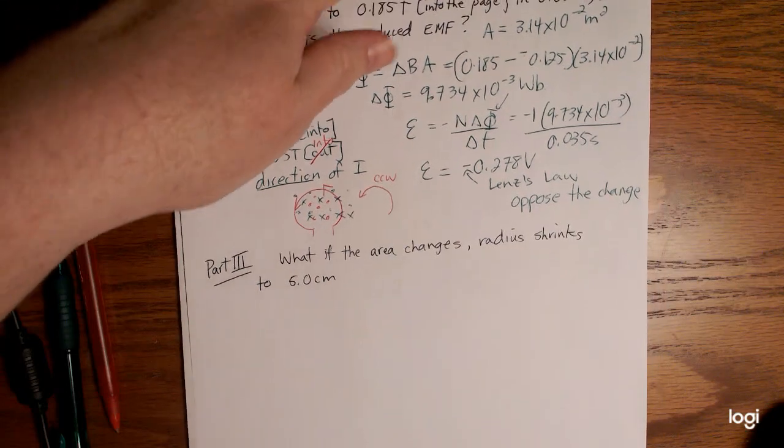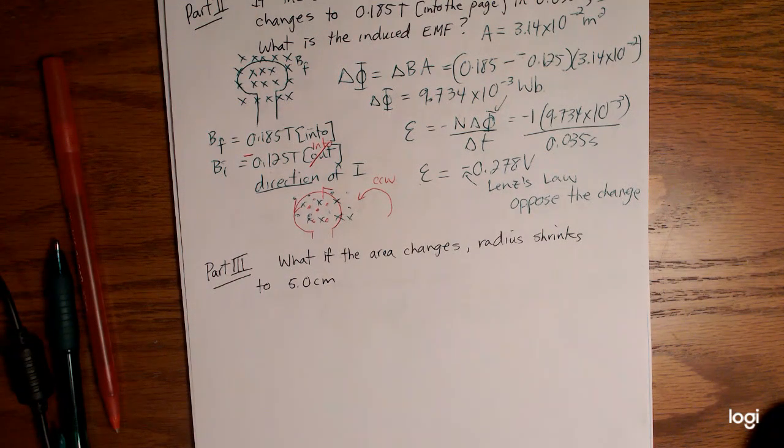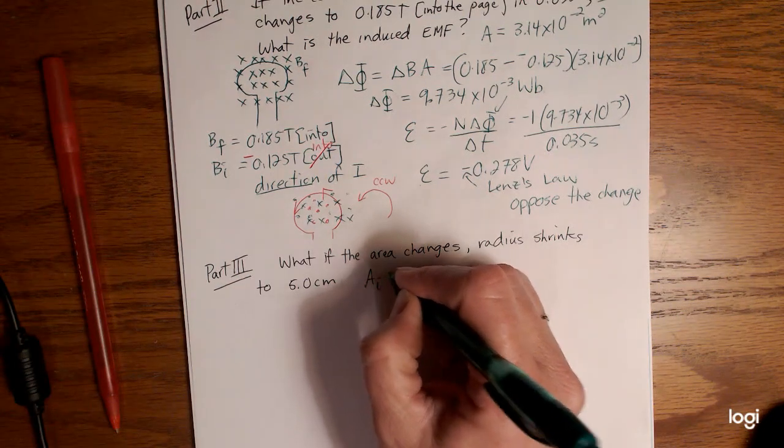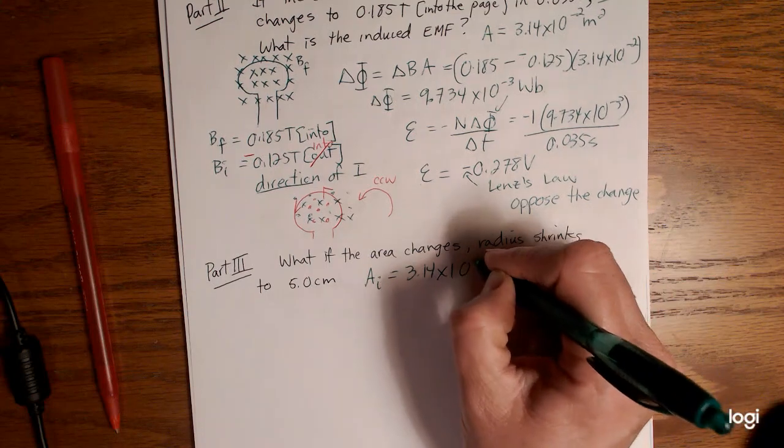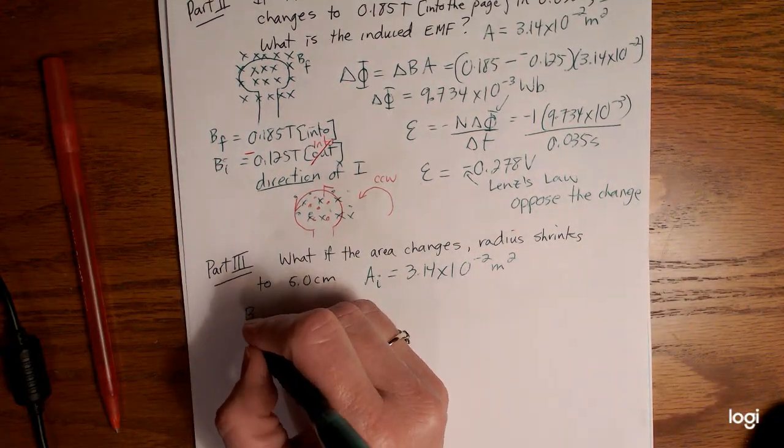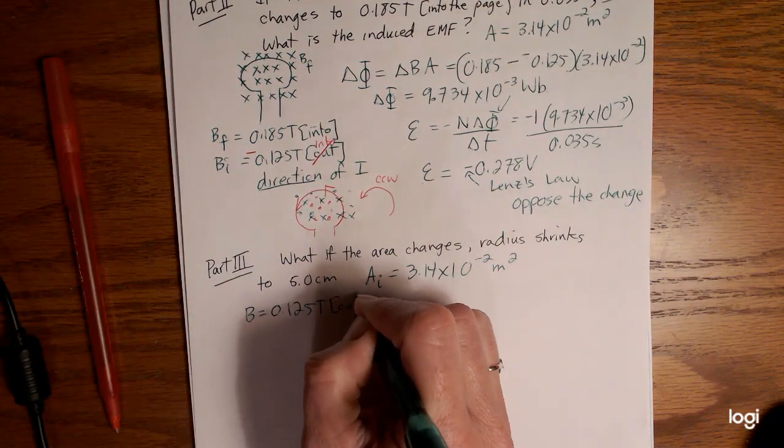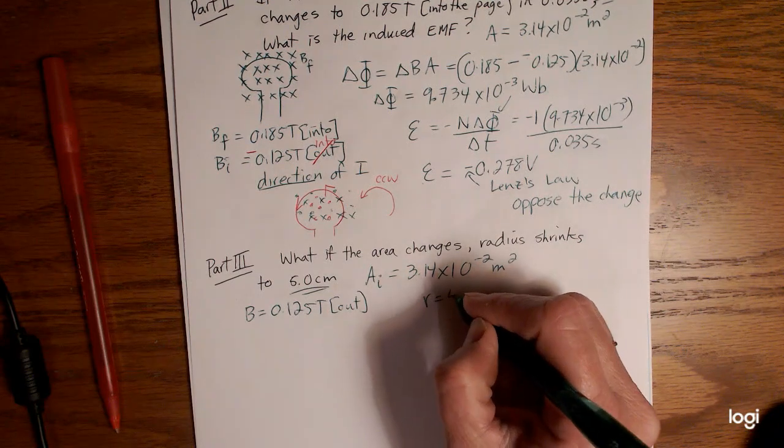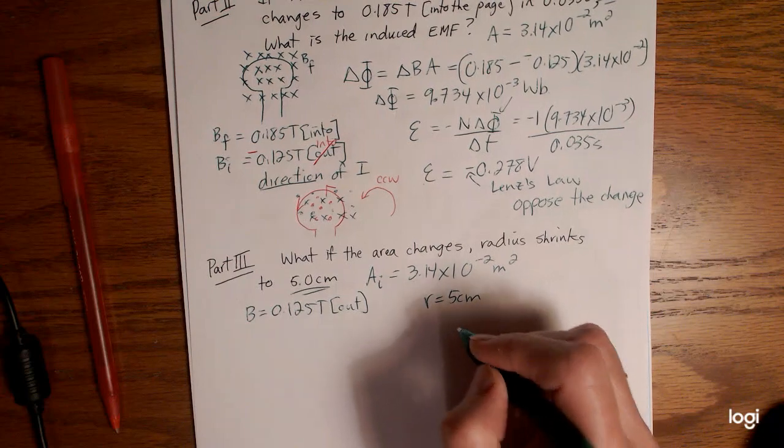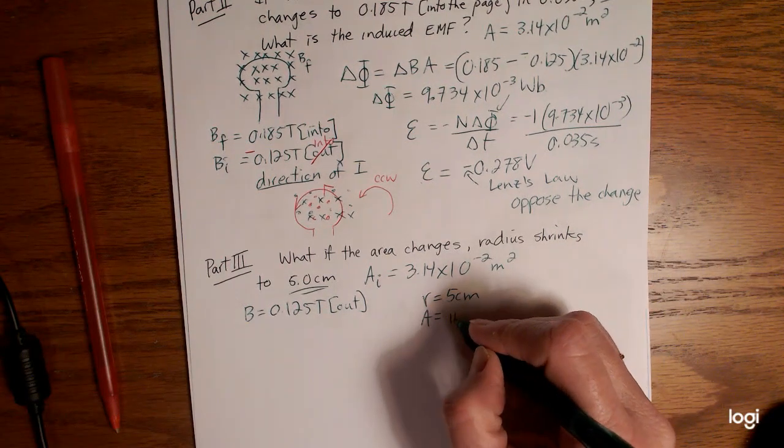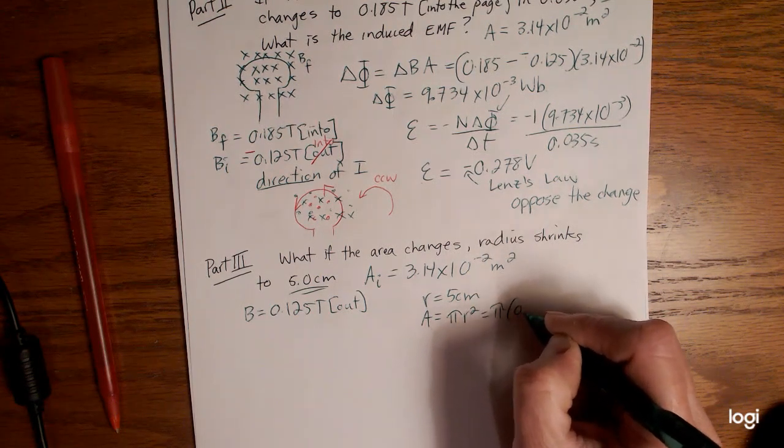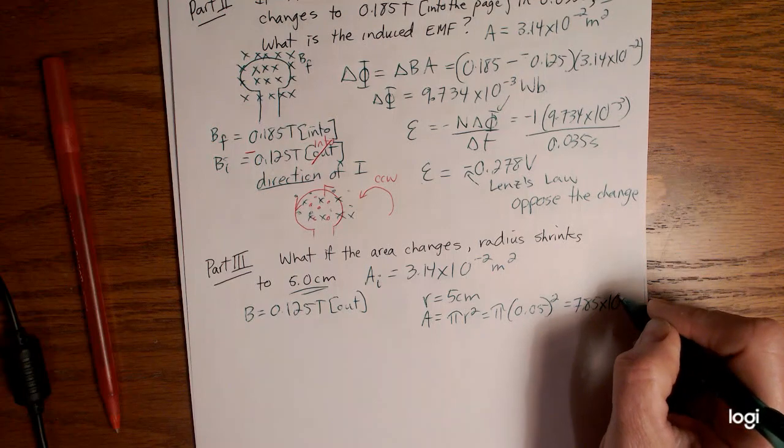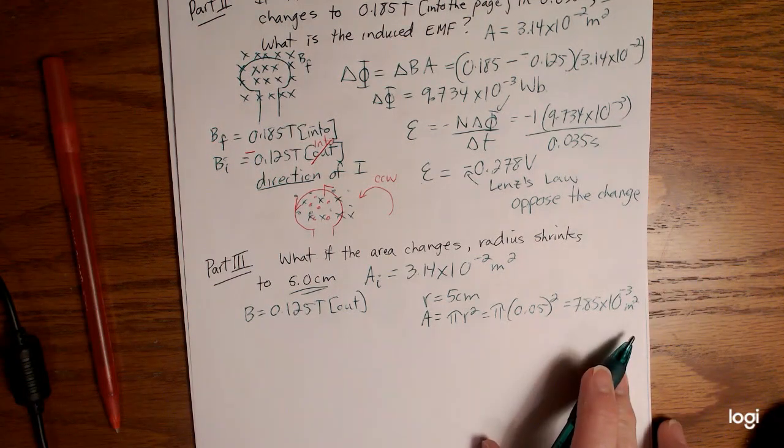Okay now what if part three? Same example but part three. So what if now the area changes? So let's go back to the original situation where we had an area initial of 3.14 times 10 to the negative 2 meters squared. We had a magnetic field strength of 0.125 teslas out. But now let's say the radius has shrunk. It's shrunk to five centimeters. So that means with our new radius of five centimeters we're going to have a new area. Our area would be pi r squared. So pi times 0.05 squared, that comes out to 7.85 times 10 to the negative 3 meters squared.